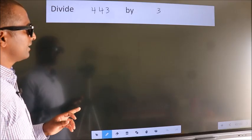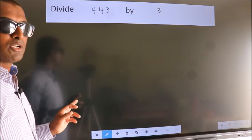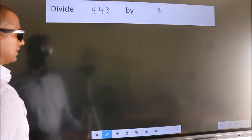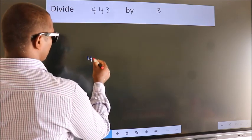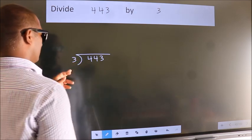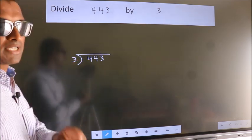Divide 443 by 3. To do this division, we should frame it in this way: 443 here, 3 here. This is your step 1.